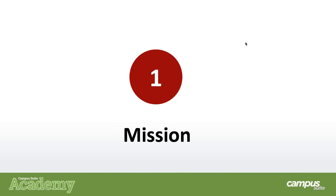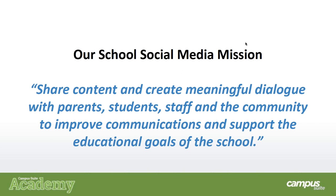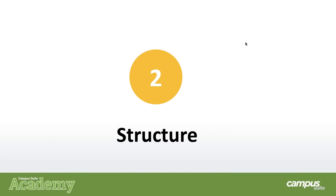Planning for a social media foundation for your school involves four major elements: mission, structure, policies, and process. First order of business is to plan your social media program and articulate it with a mission. You've got to identify exactly what those goals are. Here's an example we put together — it's in our e-book: share content and create meaningful dialogue with parents, students, staff, and the community to improve communications and support the educational goals of the school.